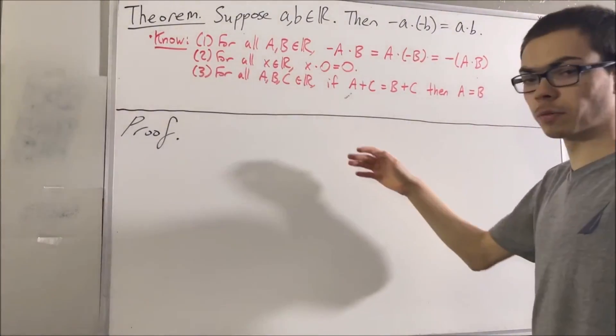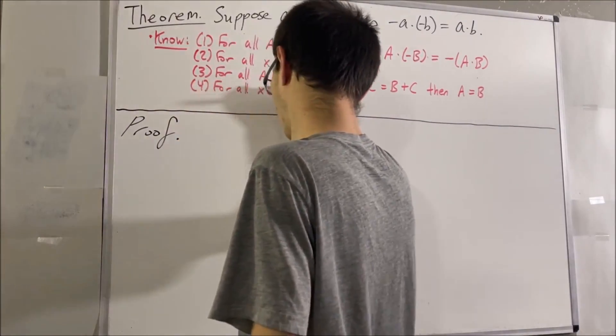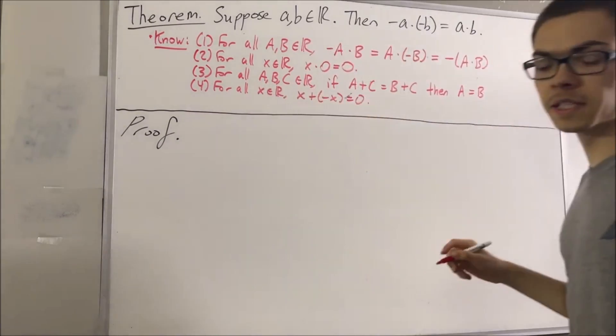The fourth is, for every real number X, X plus the negative of X is equal to 0. And the fifth is the distributive law.